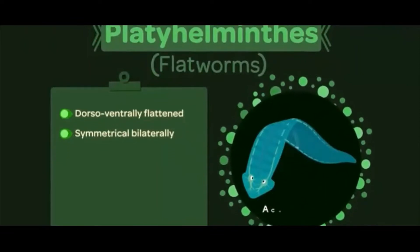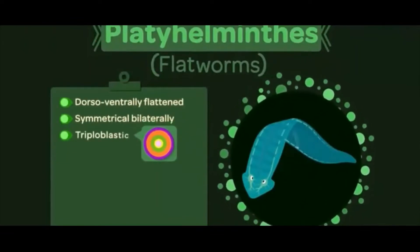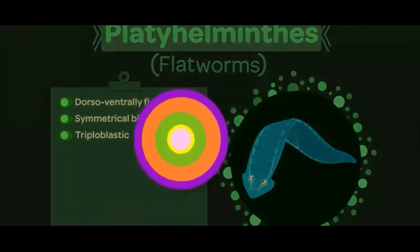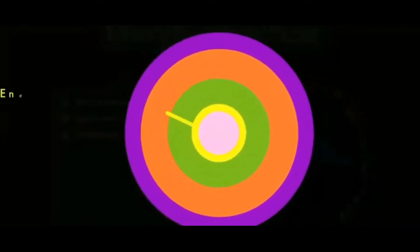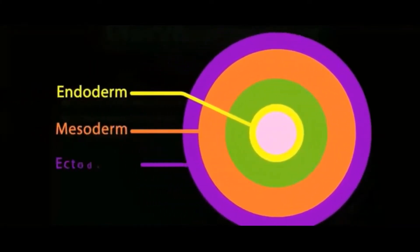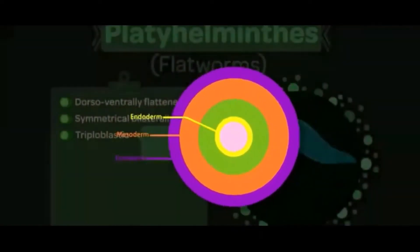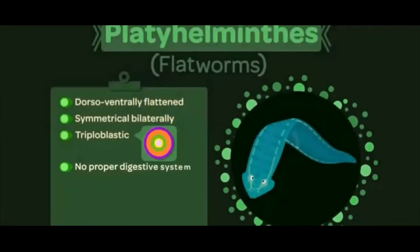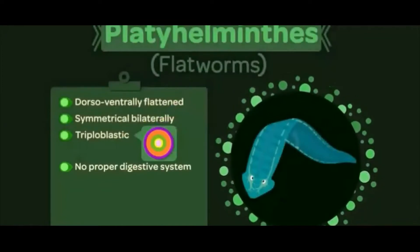Their bodies are triploblastic, meaning the body is formed from three proper embryonic layers: the endoderm, mesoderm, and ectoderm. However, there are no complex organs developed in these, and a proper digestive system is absent.